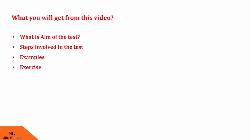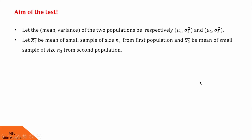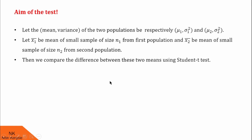Let us proceed with the first point: the aim of the test. Let the mean and variance of two populations be respectively mu1, sigma1 squared and mu2, sigma2 squared. Let x1 bar be the mean of a small sample of size n1 from the first population and x2 bar be the mean of a small sample of size n2 from the second population. The aim of this test is to compare the differences between the two means using the Student T-test.